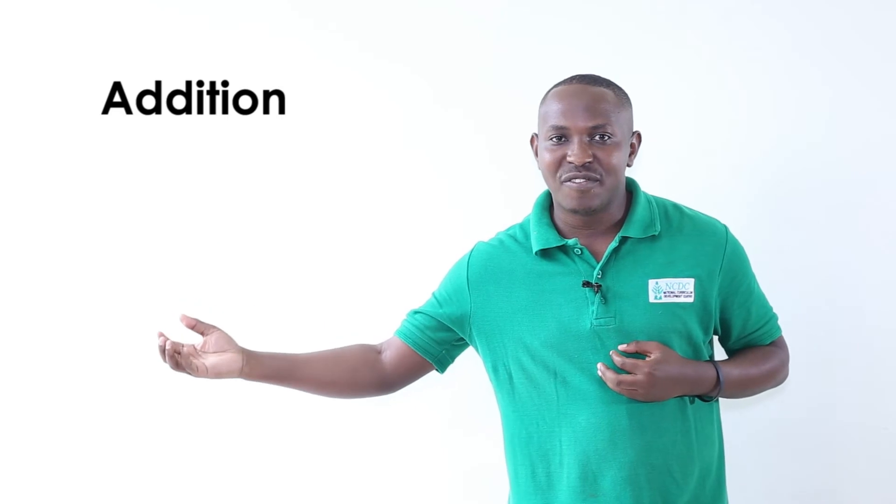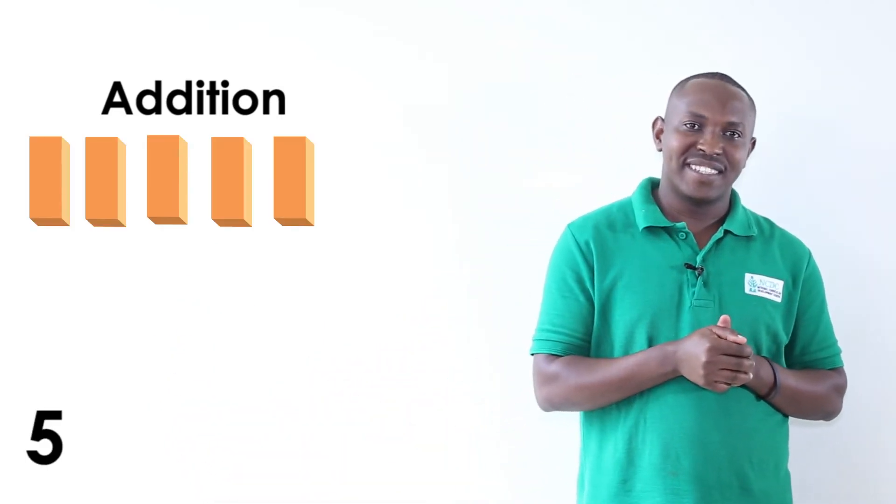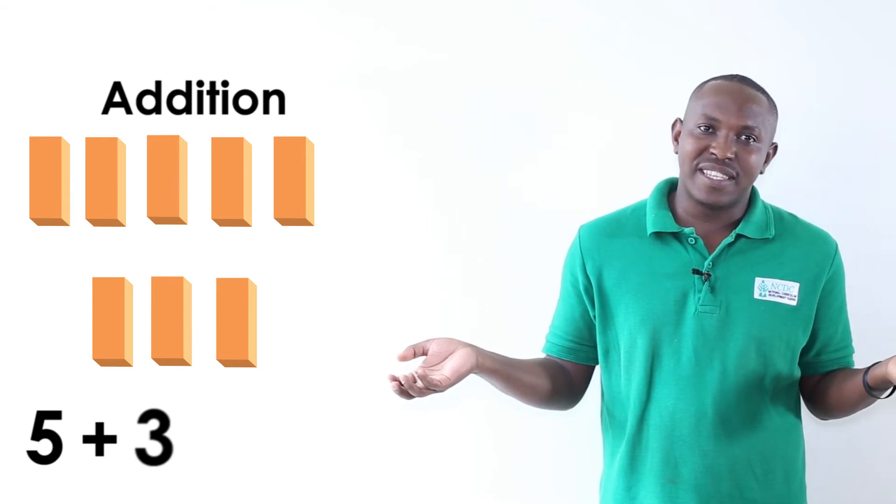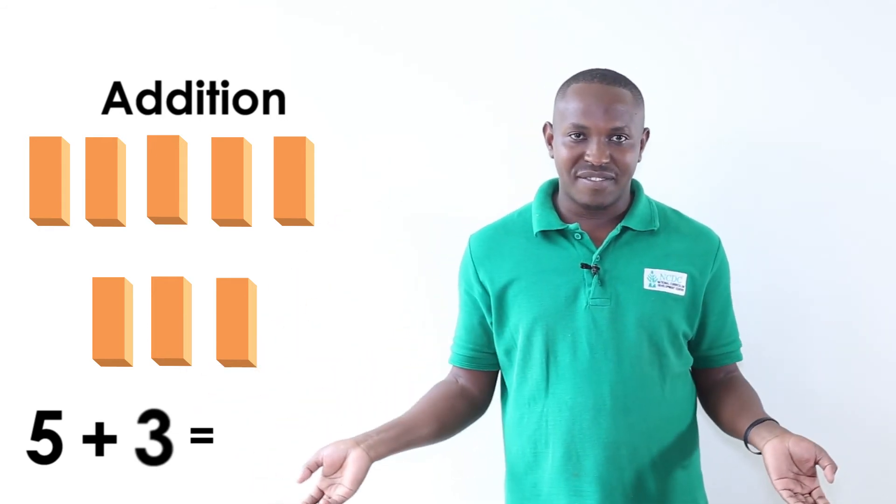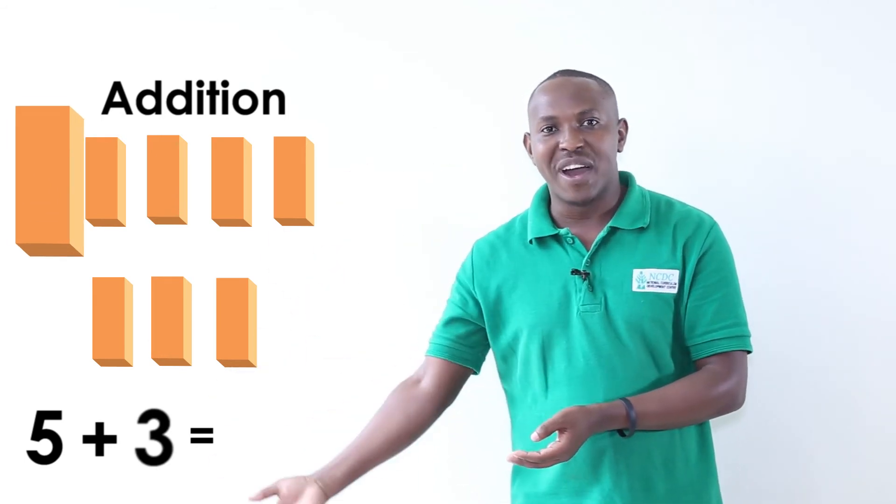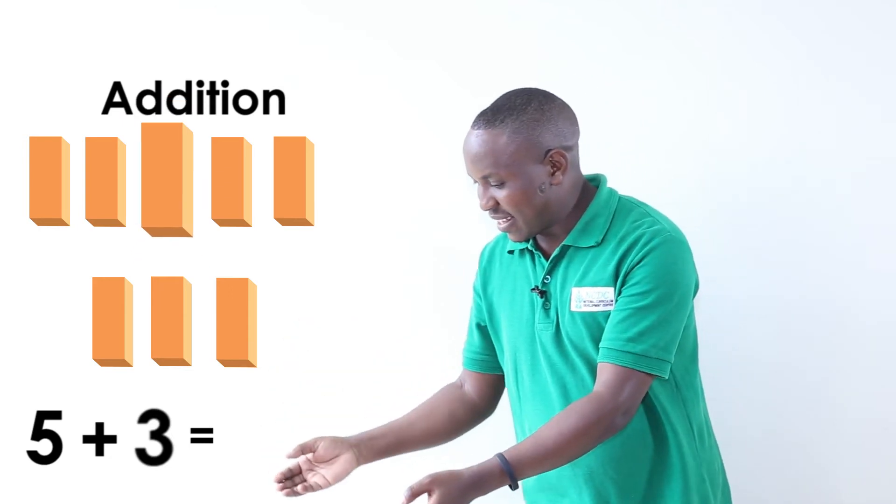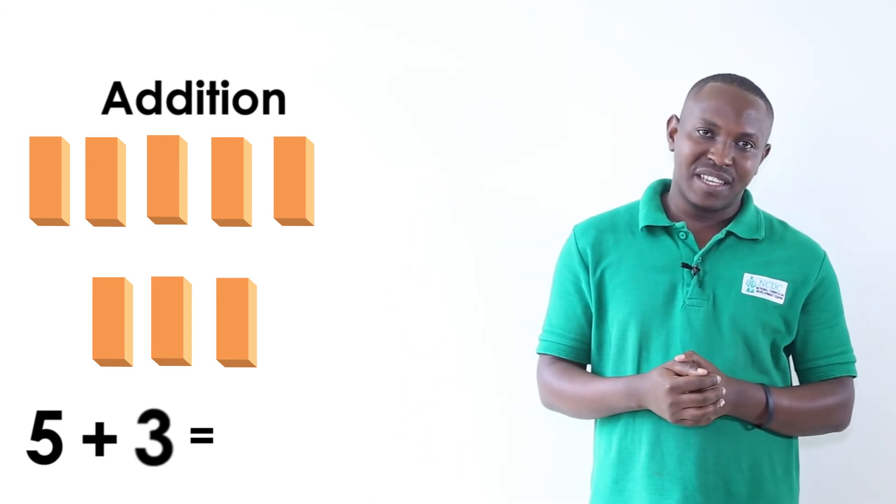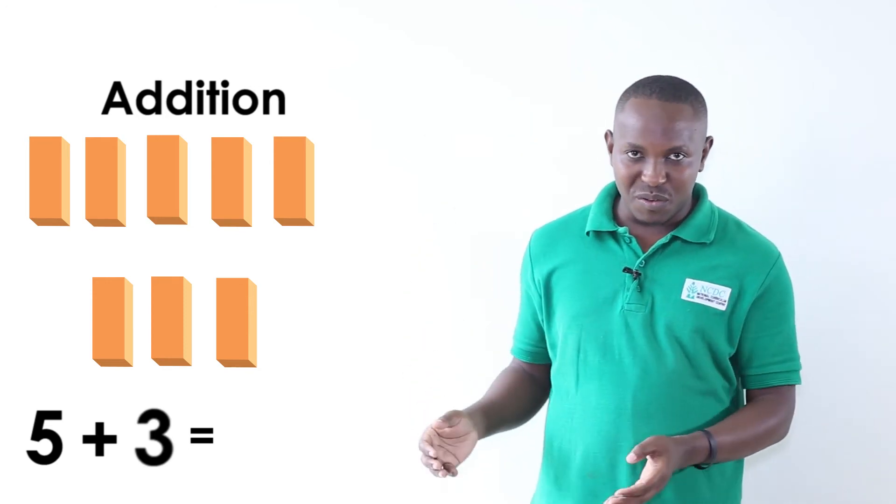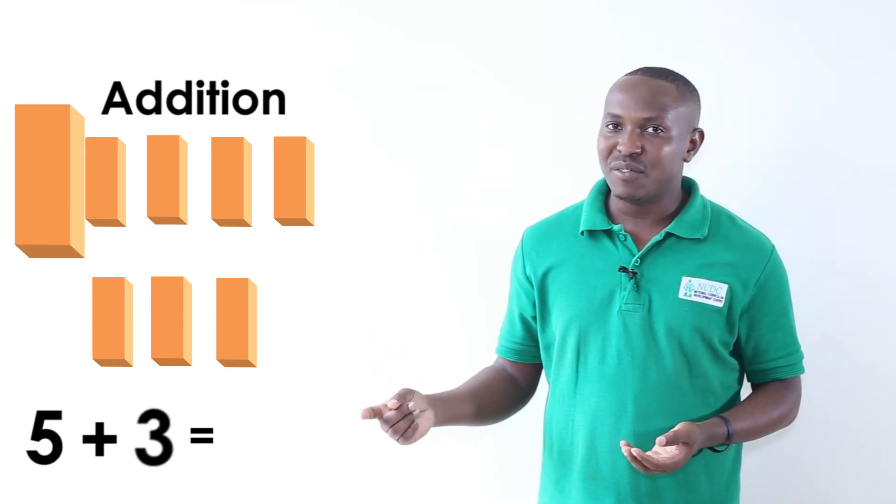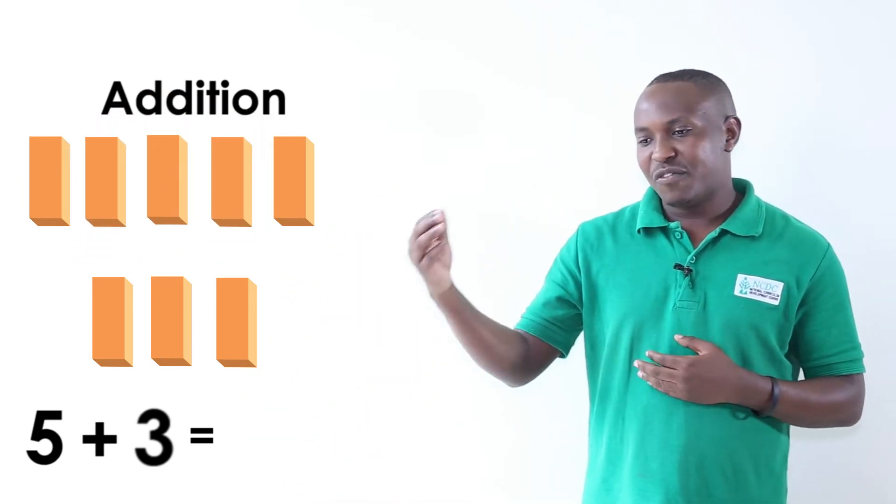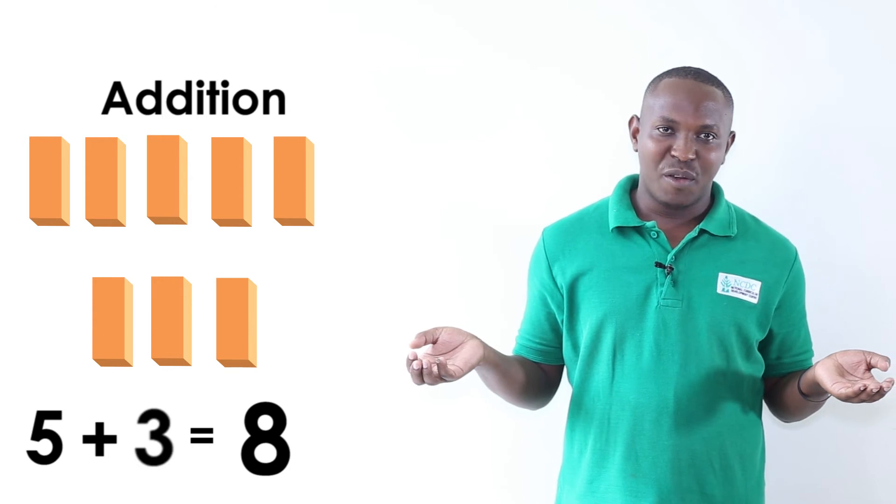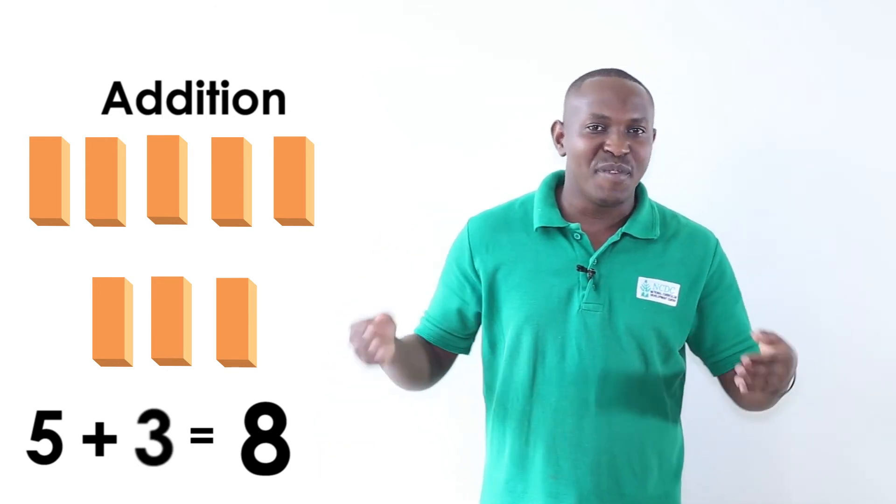I have my five bricks and other three bricks. Let's arrange them and see how many bricks we have. Five bricks. We count them: one, two, three, four, five. Then we have other three bricks. When we bring them together, we are going to count them all while arranging them. One, two, three, four, five, six, seven, eight bricks. We have added the bricks and arranged them well.